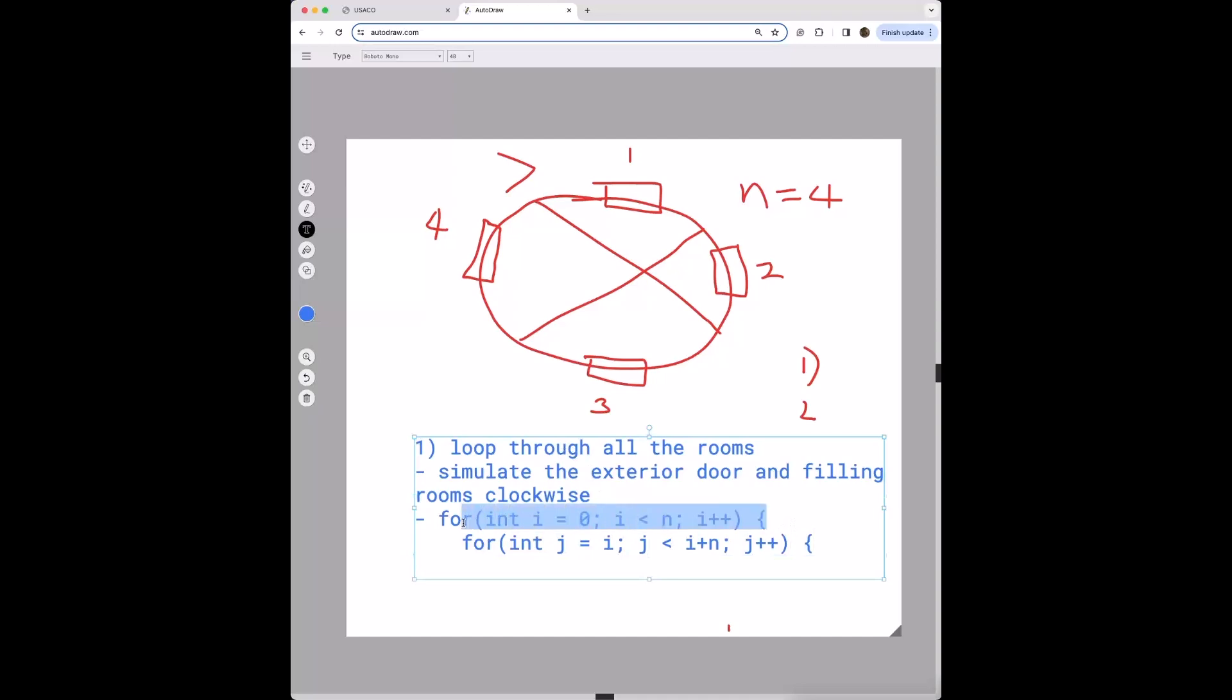So this first for loop is simulating the exterior door we're starting with, and then this one is simulating the traversal where we're taking all the cows clockwise.